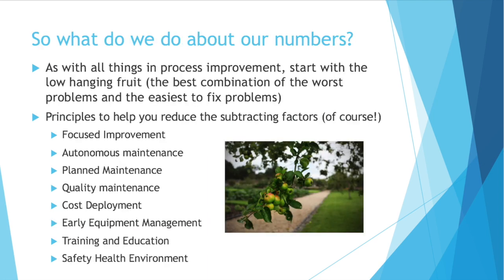So what do we do about all these numbers we calculate for our equipment? As with all things in process improvement, start with the low-hanging fruit — look at the best combination of your worst problems that are also the easiest to fix. And as with so many things in process engineering, there are guidelines and principles to help you reduce the subtracting factors.